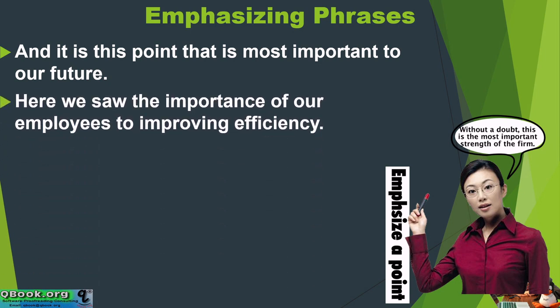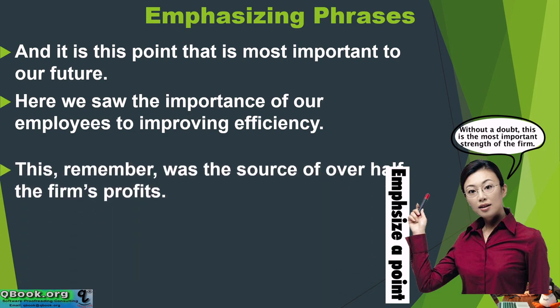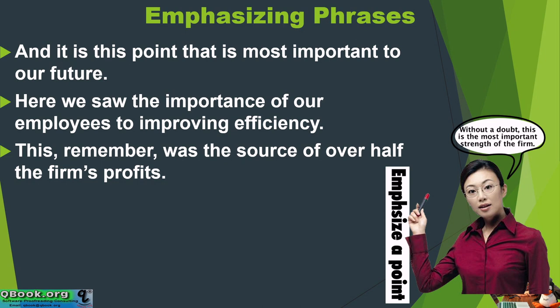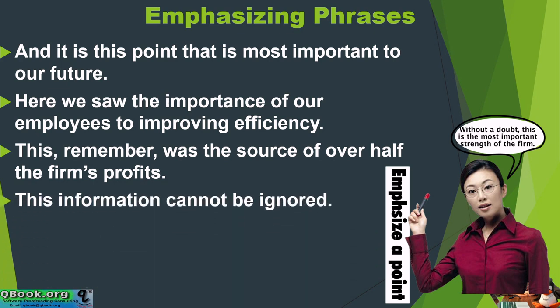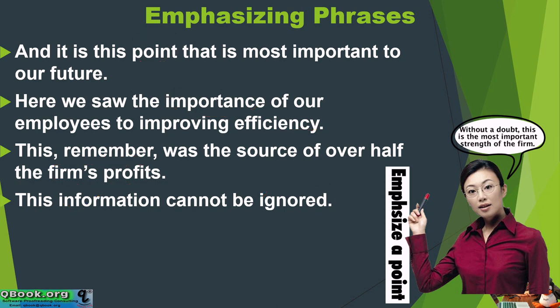Here we saw the importance of our employees to improving efficiency. Remember, this was the source of over half the firm's profits. This information cannot be ignored. In this example, we can see that we're emphasizing some important point — the importance of our efficiency. Remember, the firm's profits cannot be ignored. So this is a way to draw attention back to our main point.